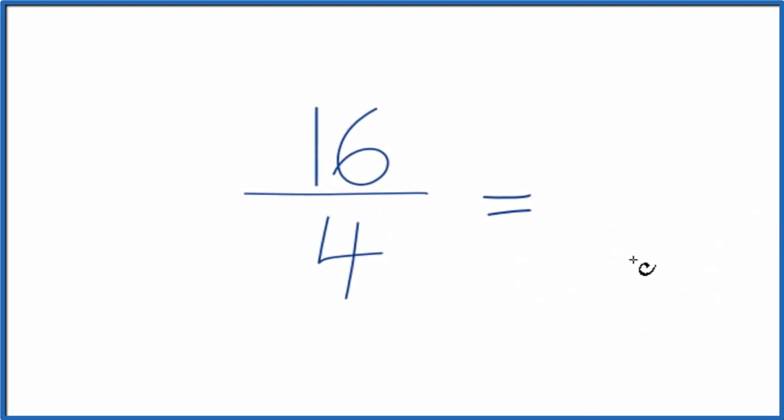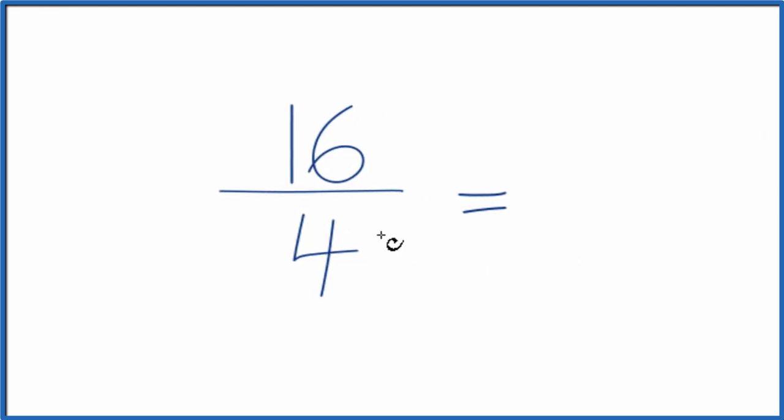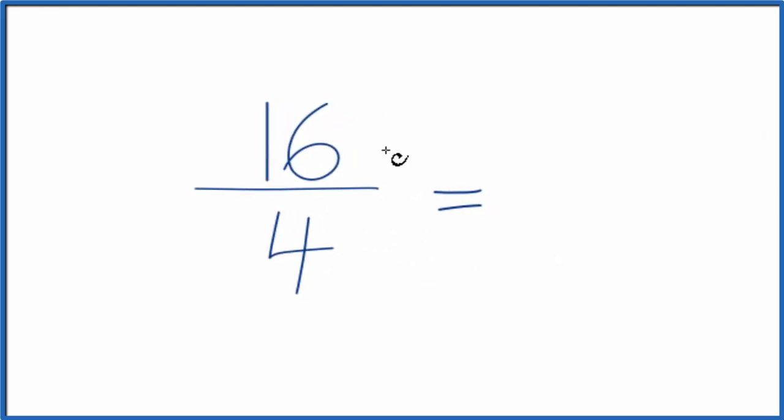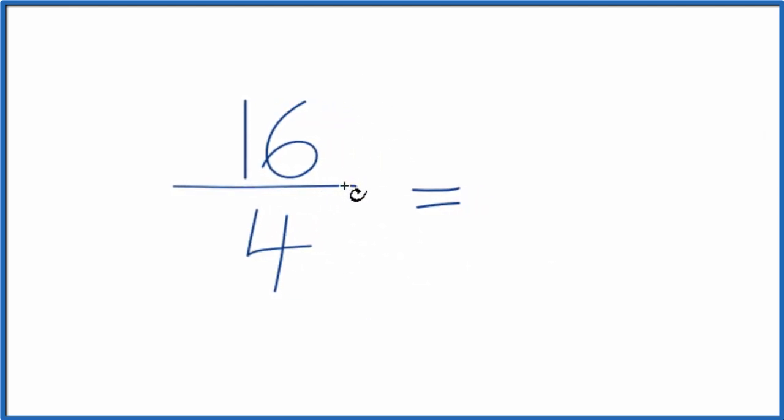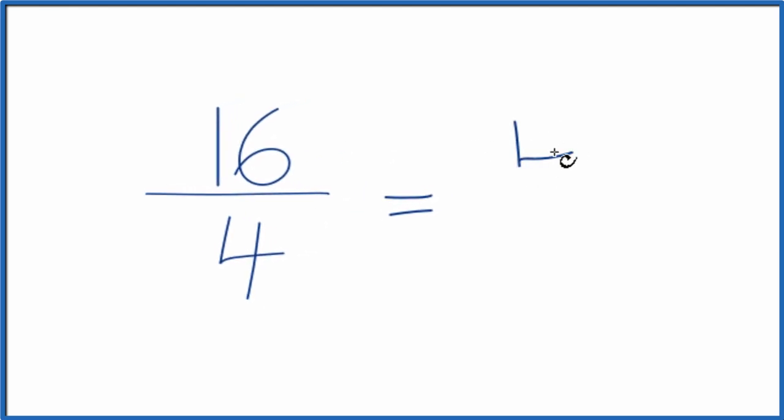So to do that, we want to find a common factor, something that goes into 16 and 4. I know that 4 goes into 16 four times, so let's divide 16 by 4. That'll give us 4.